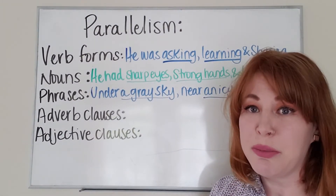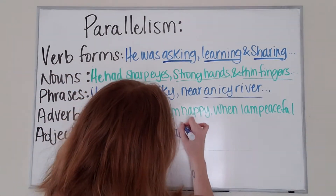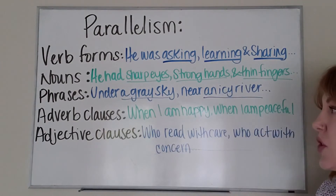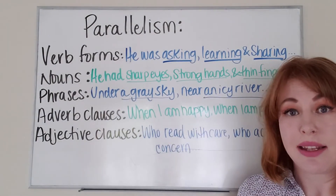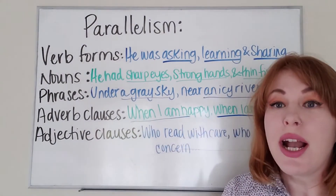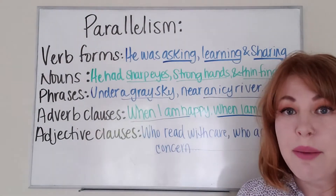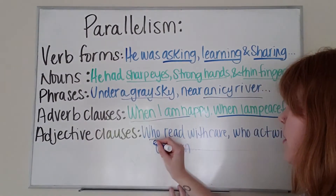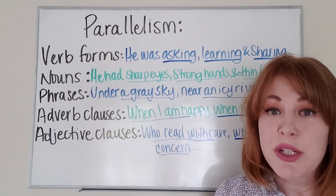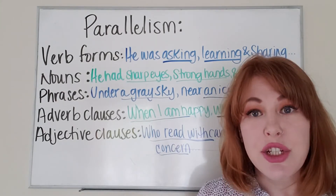Parallelism also works with adverb clauses and adjective clauses. In our adverb clause, 'when I am happy, when I am peaceful' can describe somebody's state of being. In our adjective clause, 'who read with care, who act with concern' could describe a person or a noun. Both of these ideas are presented in the same grammatical way and in the same pattern to make our ideas clearer and easier to understand.